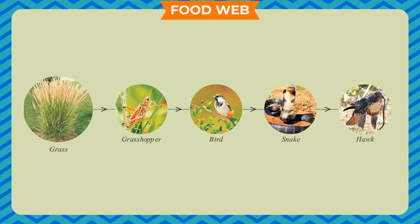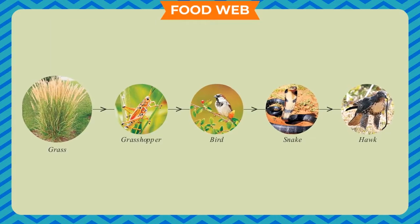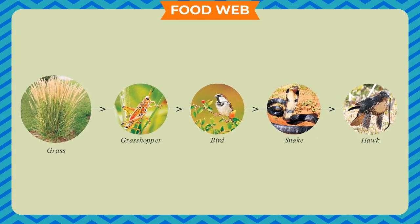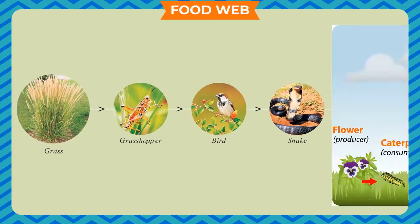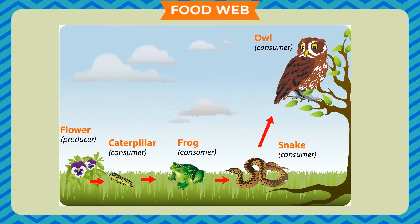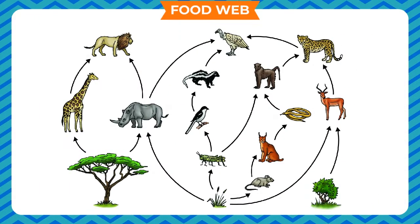Food web: We have several food chains in nature that are connected to each other. All food chains are interlinked, and this interconnected network of food chains is called a food web.